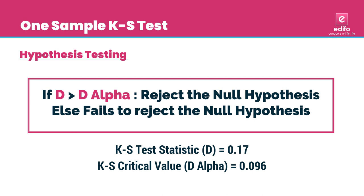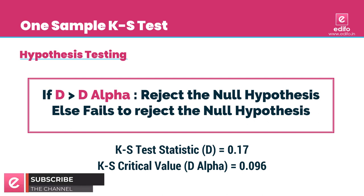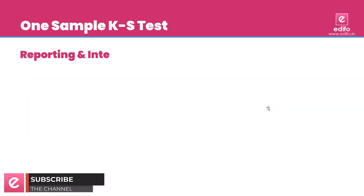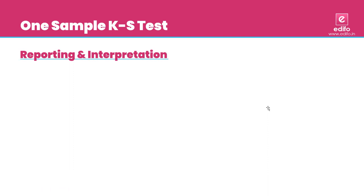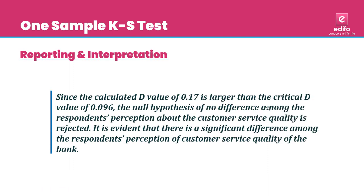For reporting in a research paper: 'Since the calculated D value of 0.17 is greater than the critical D value of 0.096, the null hypothesis of no difference among the respondents' perception about the customer service quality is rejected. It is evident that there is a significant difference among the respondents' perception of the customer service quality of the bank.'